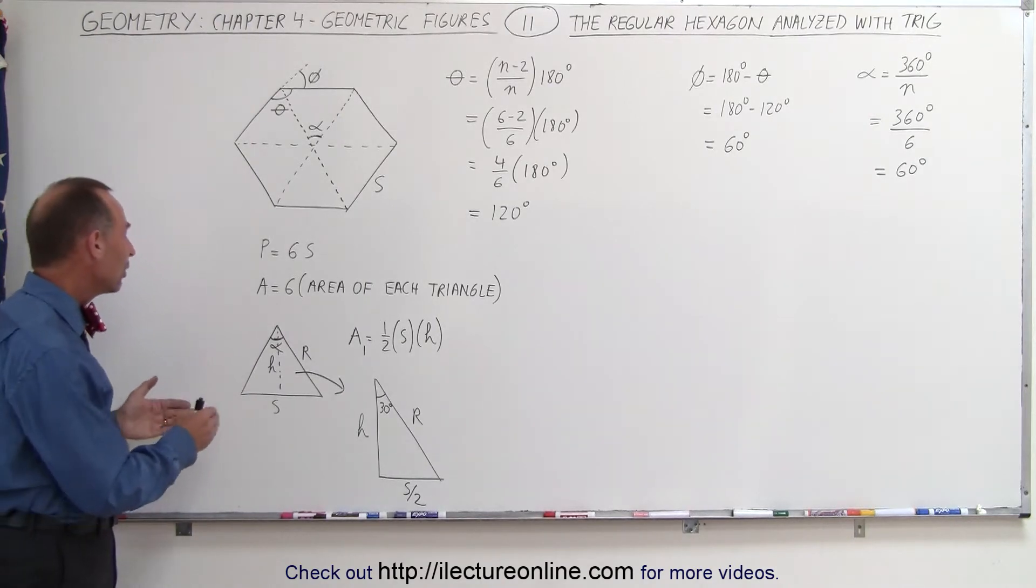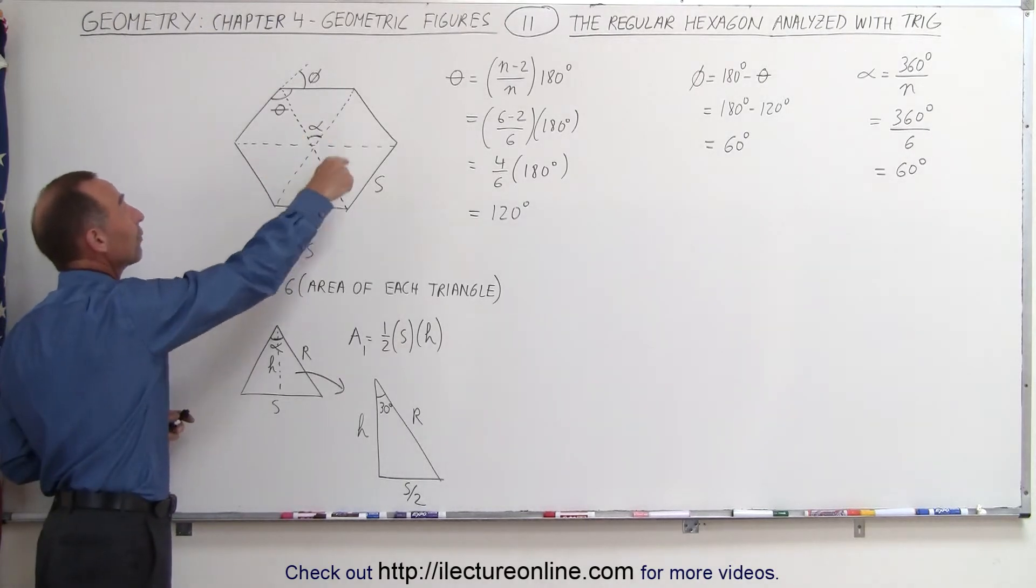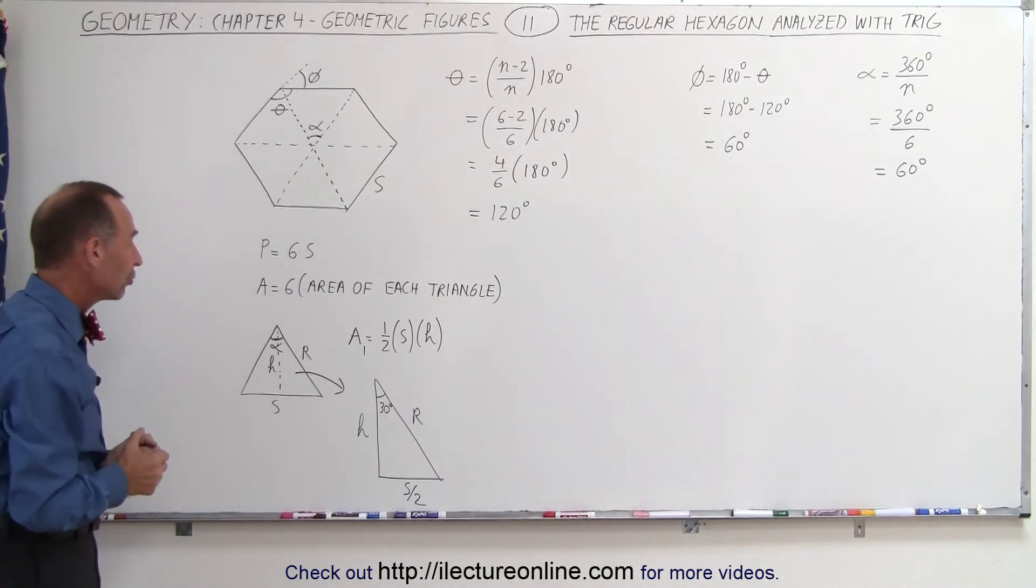We're actually dealing with an equilateral triangle. Each of these six triangles of the hexagon is an equilateral triangle.